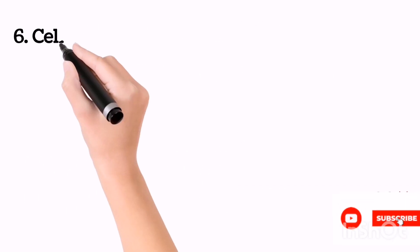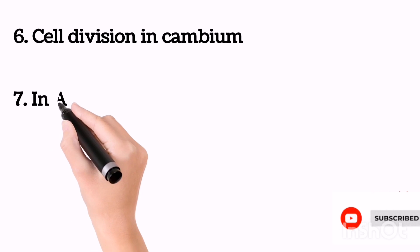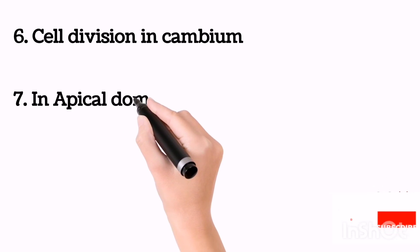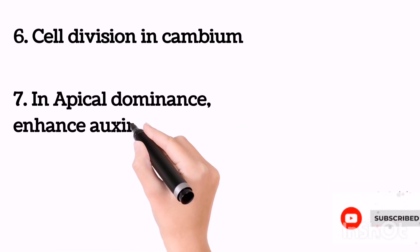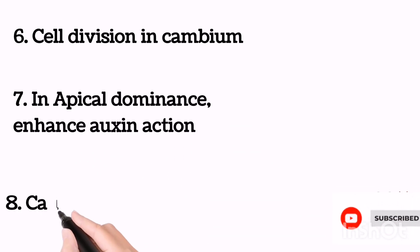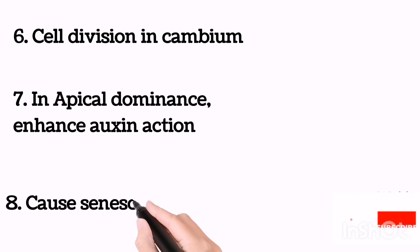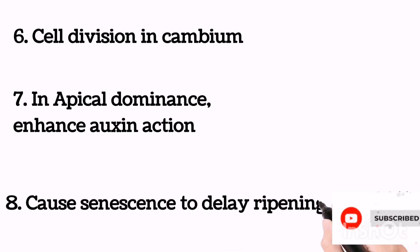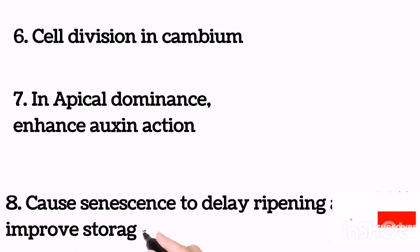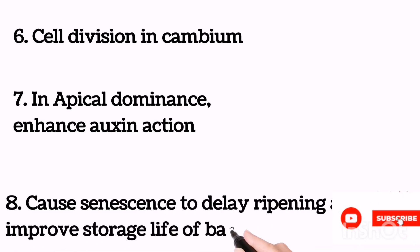Gibberellins promote cell division in the cambium. In apical dominance, gibberellins enhance auxin action. Gibberellins also cause senescence to delay, ripening and improving the storage life of bananas and grapes.